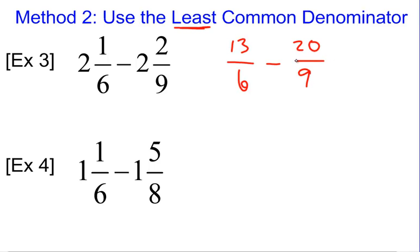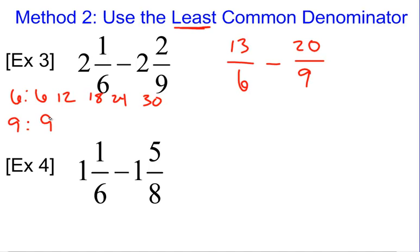Now I'm going to find my least common denominator. To do that, we need to list all the common multiples of 6 and 9. For 6 we have: 6, 12, 18, 24, 30, and so on. For 9 we have: 9, 18 — we found one right there. So we know that our least common denominator is 18.